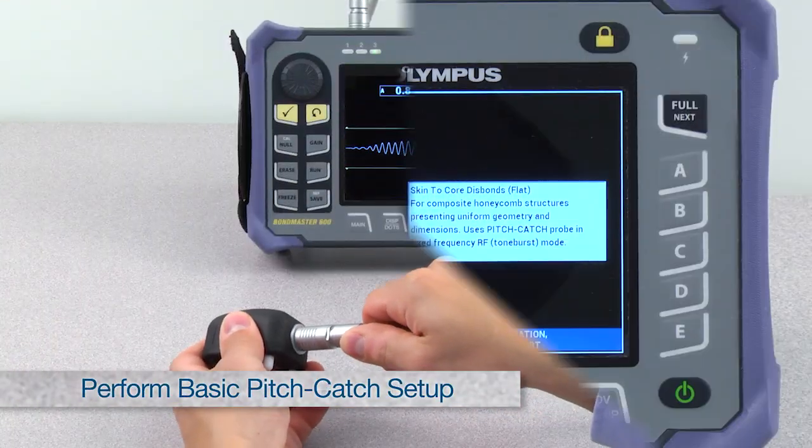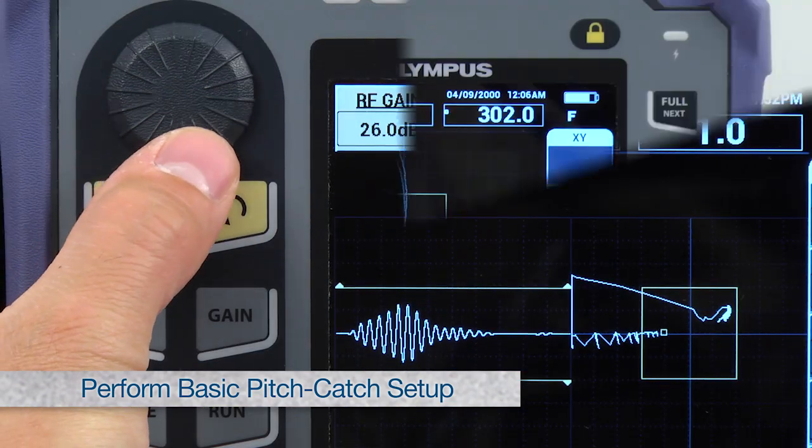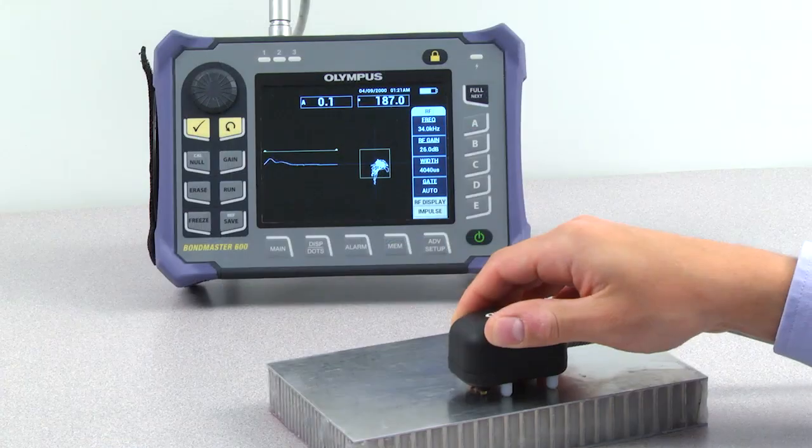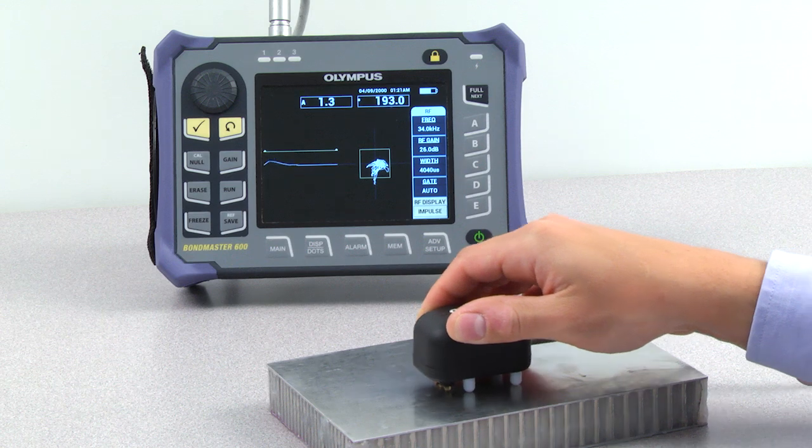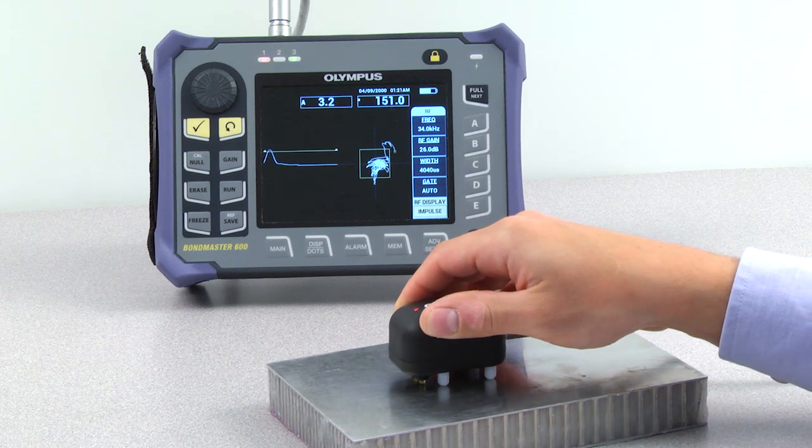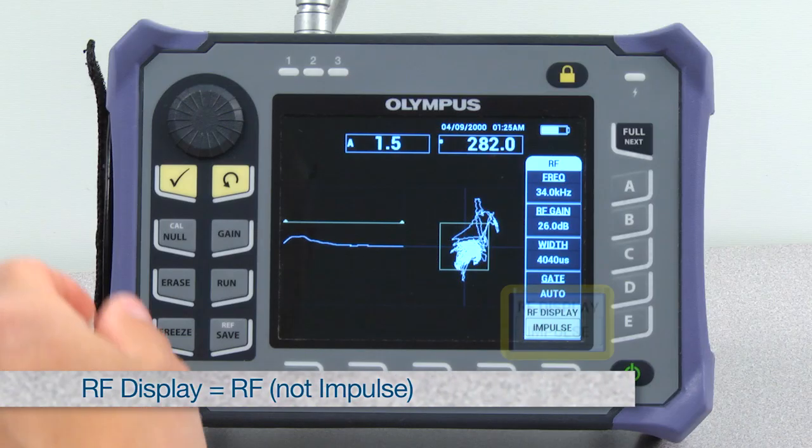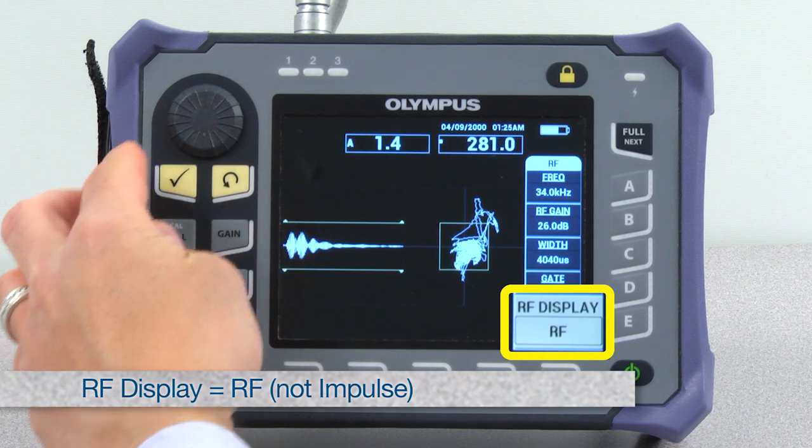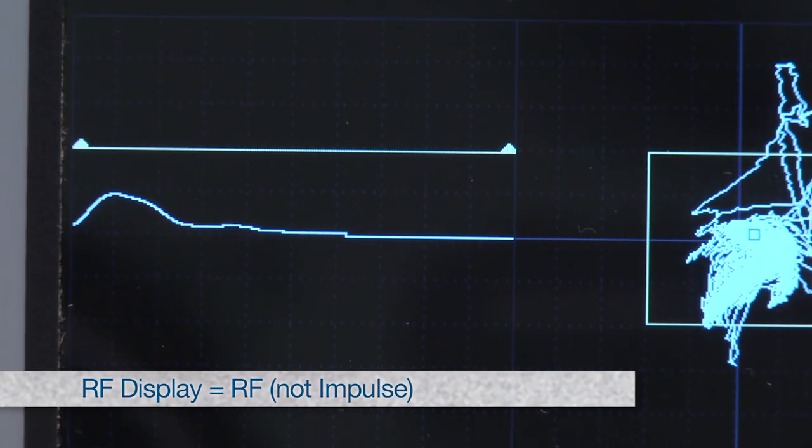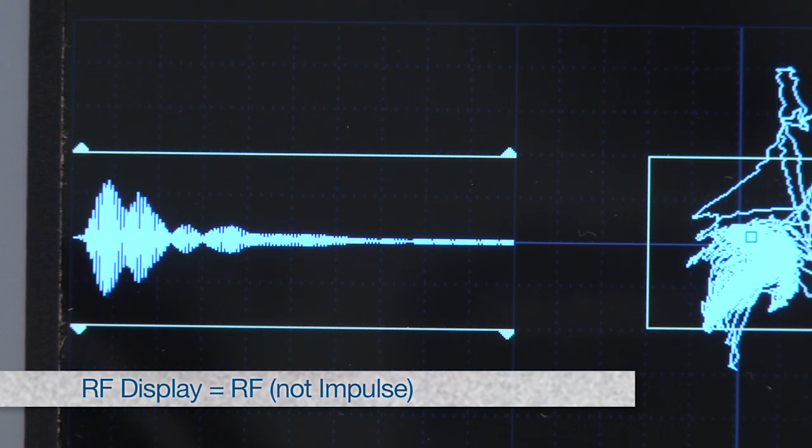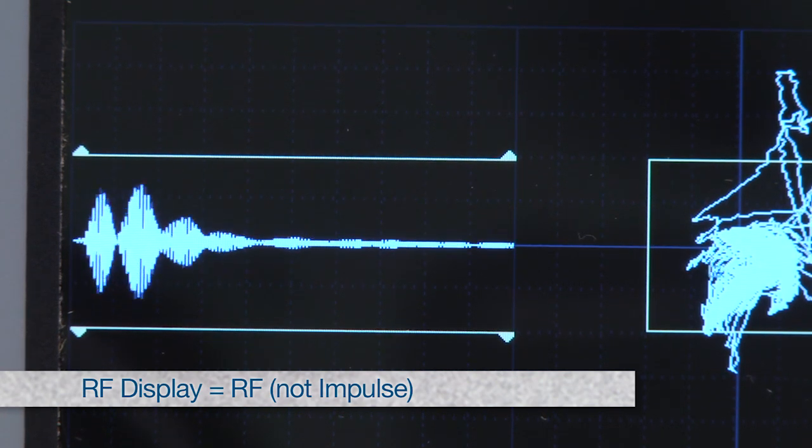First, perform a basic pitch catch RF setup as explained previously in this video. If you believe you have finished, but the signals do not look satisfactory, follow these steps. Make sure to display the RF signal as RF and not impulse. The RF display is preferred as each signal oscillation can be seen.